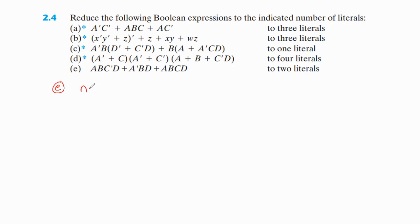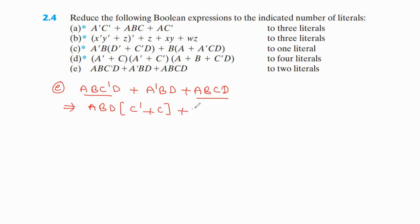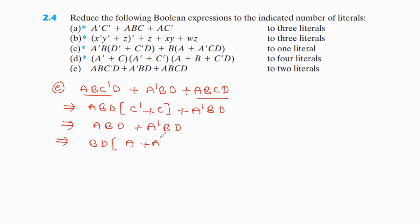Part E: ABC'D + ABCD. In the first and last terms, ABD is common. So ABD(C' + C) + A'BD. Since C' + C = 1, we get ABD + A'BD. Take BD as common: BD(A + A'). Since A + A' = 1, therefore BD is the result — two literals. Thank you.